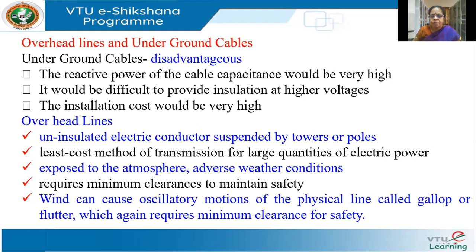Faults are minimized with underground cables. The main problem with overhead lines is they're prone to faults — birds can sit on them and short circuit, they're hazardous to flying objects, and lightning prone. You don't have these issues with underground cables. You'll study more in detail in your fourth unit.